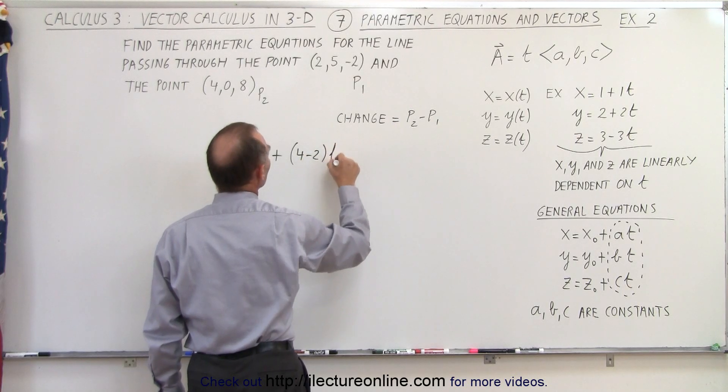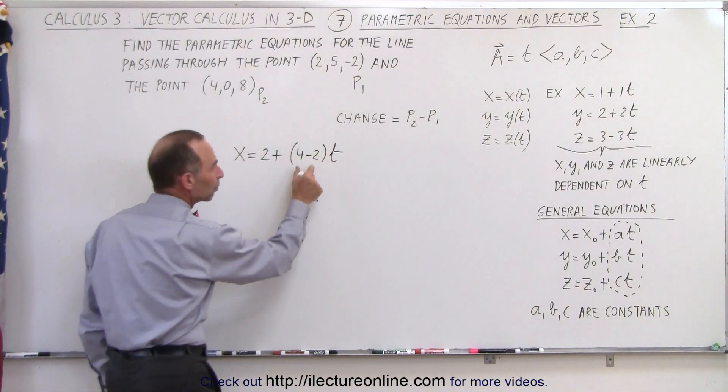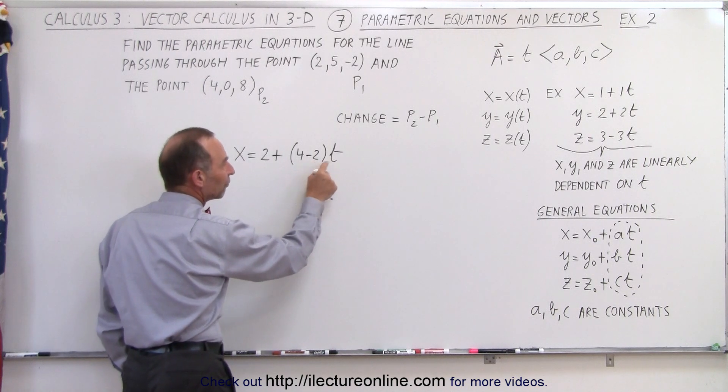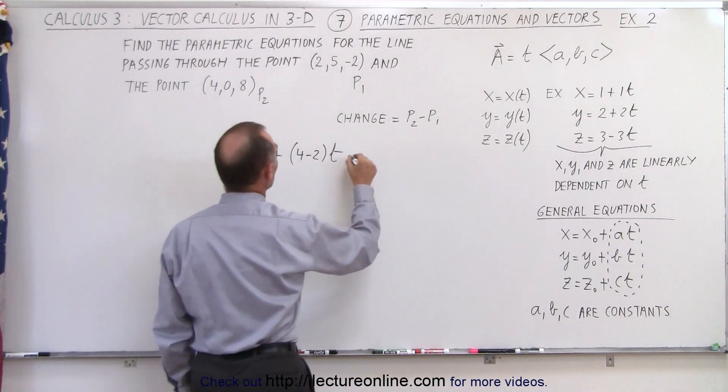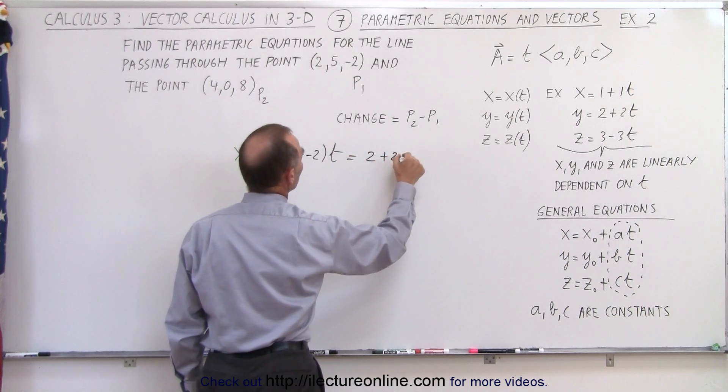So there's going to be that much of a change in x for each unitary change in t. That's what that means. So this can then be written as 2 plus 2t.